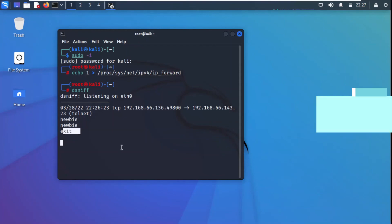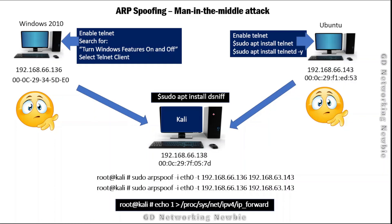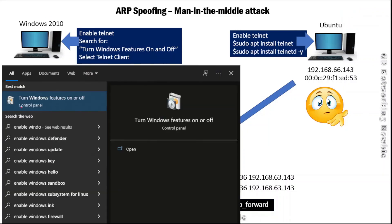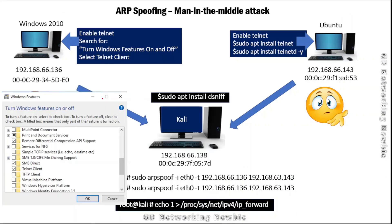One last point: I used Windows 10 as the telnet client. You can enable the Telnet Client feature in Windows 10 by searching for 'Windows Features on or off' and enabling it there. On Ubuntu, I used it as a telnet server using the appropriate command. That's it — I hope this video was helpful. Thank you, and hope to see you in another video.